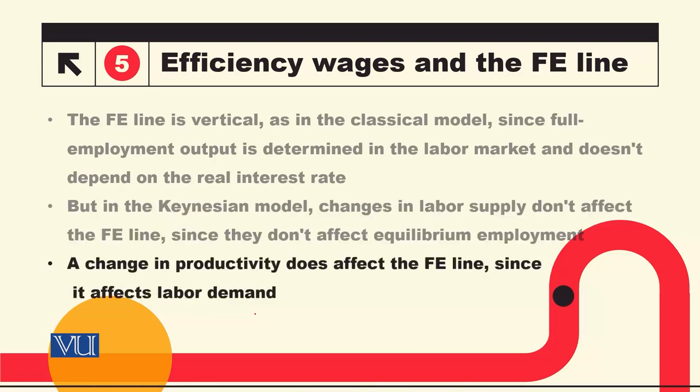A change in productivity does affect the FE line since it affects the labor demand curve. In the classical model, both labor supply and productivity shocks shift the FE line. In the Keynesian model, only productivity and capital stock affect the FE line through the labor demand curve.